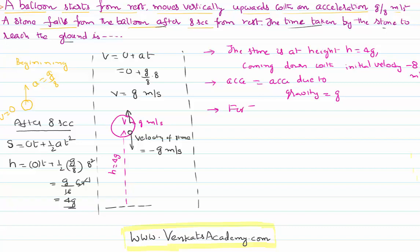I would like to use the equation s = ut + (1/2)at². s is h, u is -g, t is what I want to calculate, a is g itself, and t². This h value we calculated as 4g, so 4g = -gt + (1/2)gt².